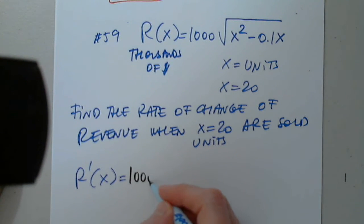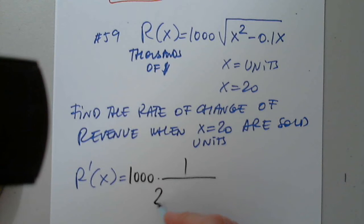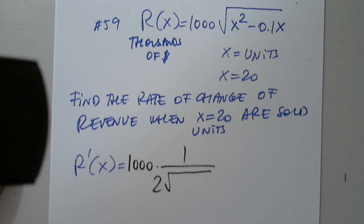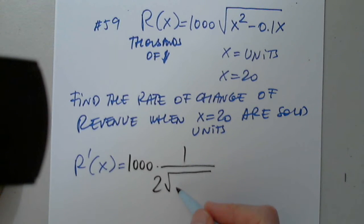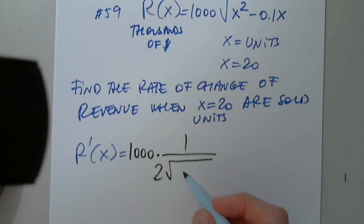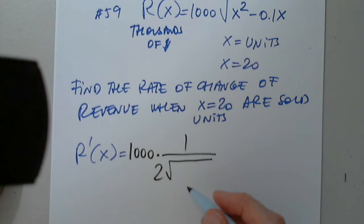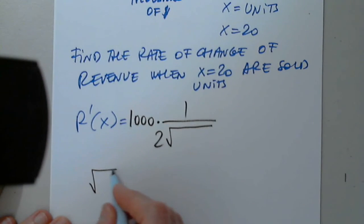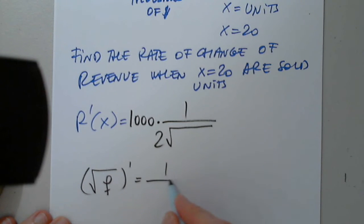You have to write the constant in front — one over two, excellent — times the square root. So when we left off, you said you have to make sure you put that thousand down there and then do the thousand constant and then do the derivative of the other part. Good. So the square root of a function prime is one over two times the square root of the function, times the function prime.